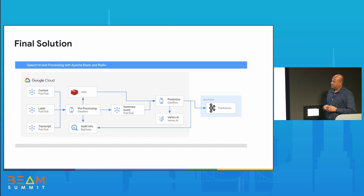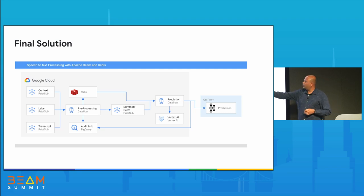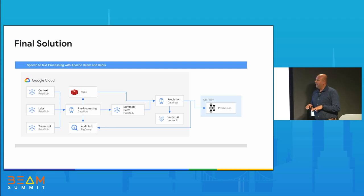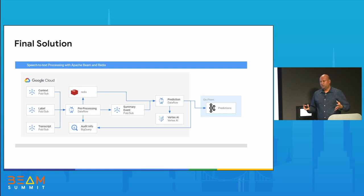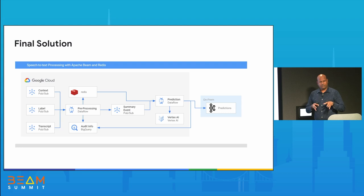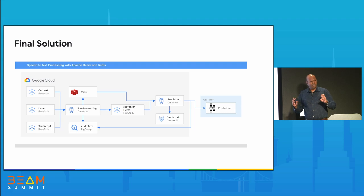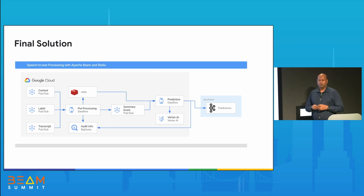The final solution uses two Dataflow pipelines: one for creating the payloads that go out for scoring, and a second for invoking predictions from Vertex AI. The reason for separating them is that your machine learning model might change or you might want to score against multiple models. This makes it almost a plug-and-play solution — you preprocess in one place, emit the payload, and plug in as many models as you like for scoring.